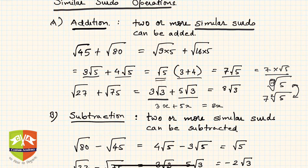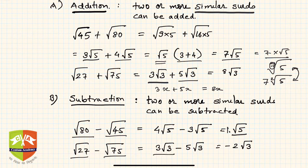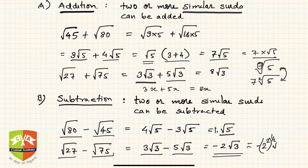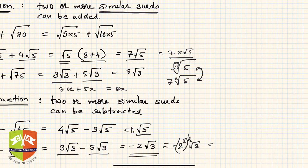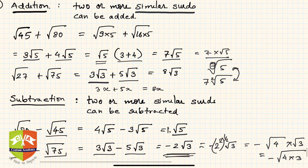Subtraction can also be done only with similar SIRDs. So √80 − √45 = 4√5 − 3√5 = 1·√5. For √27 − √75: that is 3√3 − 5√3 = −2√3. You can also express −2√3 as −√(4)·√3 = −√12. So you can reduce and express the result in whichever equivalent form you prefer.